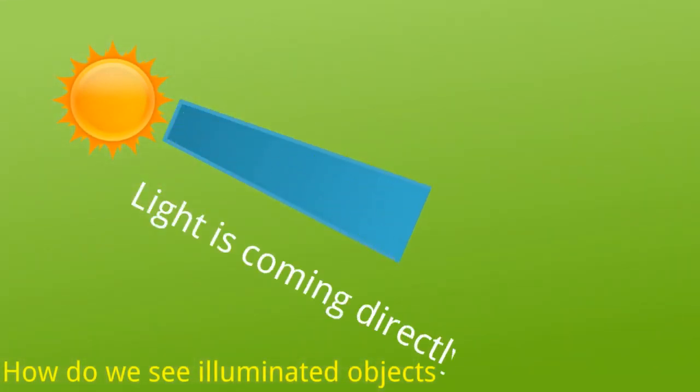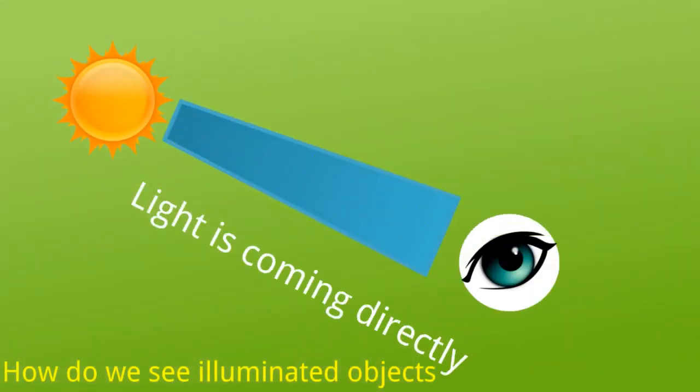How do we see luminous objects? It's very simple — light comes from luminous objects to our eyes directly, so we can see them. But don't look at the Sun with bare eyes, you can get hurt. In the same way, light from a bulb comes directly to our eyes and we can see it.